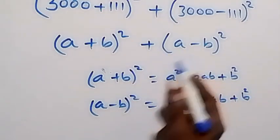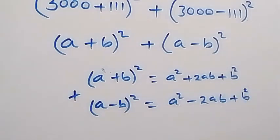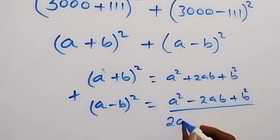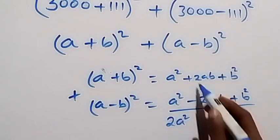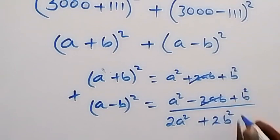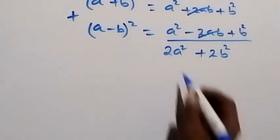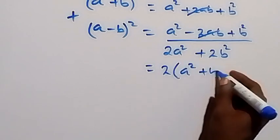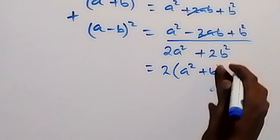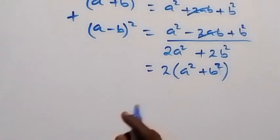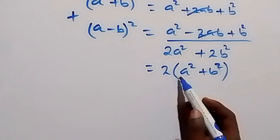Since we had both terms, we add them together. The right-hand side gives us a squared plus a squared, that's 2a squared, then plus 2ab minus 2ab — those cancel out. Then b squared plus b squared gives 2b squared. We can factor 2 out, giving us 2 times bracket a squared plus b squared.